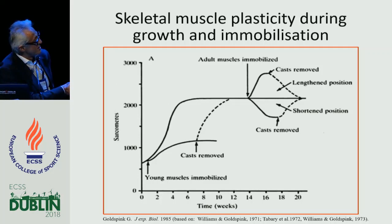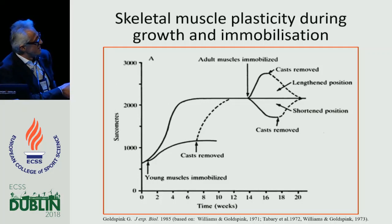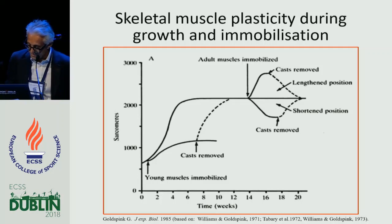If instead the muscle is immobilized in a shortened position, sarcomeres are quickly lost. Again, once the cast is removed, sarcomeres return to the functional length. If we immobilize the muscle in the very early stages, growth is impaired. Once the cast is removed, sarcomeres are quickly added returning to the original functional length.